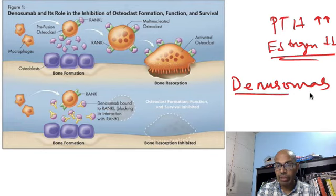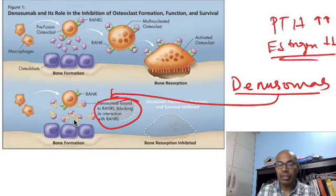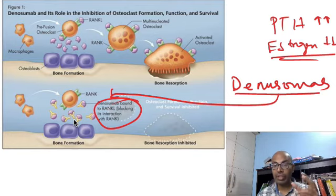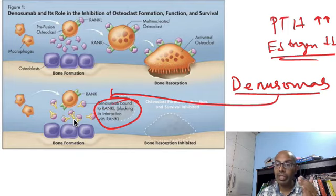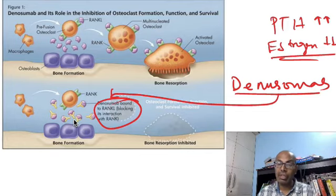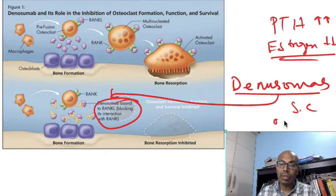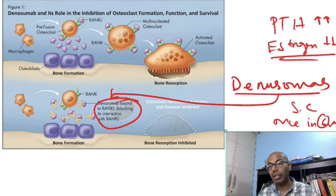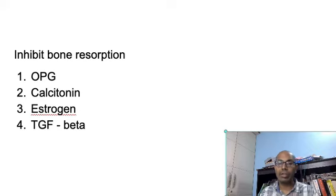Denosumab is a monoclonal antibody which binds to the RANK ligand released from the osteoblast. It is used as a second or third line drug for osteoporosis. The first line is bisphosphonates, second line can be teriparatide, and if those don't work, denosumab or anti-sclerostin antibodies can be used. Denosumab blocks RANK ligand, prevents its attachment to RANK on the osteoclast, decreases osteoclast activity, and thereby increases bone density. It is given subcutaneously once every six months, making it very patient-compliant.